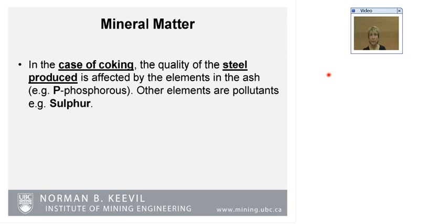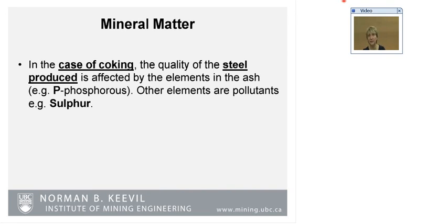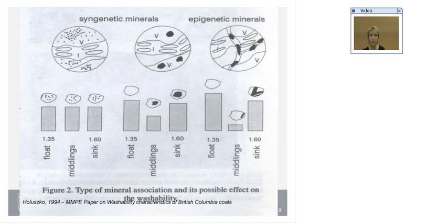In terms of coal destined for coke making, the quality of steel is quite affected by some of the elements in ash. For example, phosphorus is very deleterious in terms of steel quality. When it comes to coal destined for power production, sulfur — pyrite and other forms including organic sulfur — is very disadvantageous for thermal coal. Coal preparation therefore aims at removing most of the mineral matter, or at least to the level acceptable by the specifications of the particular coal.